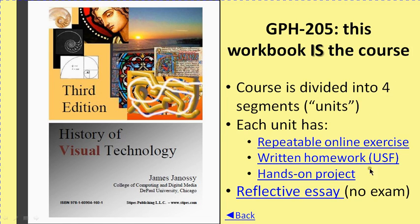Each of these units has three items of work. There's a repeatable online exercise, which is instantly graded homework. It's intended that you do that multiple times, one question at a time, and it helps you review what you don't know — to force you to go back and read, view, and find out where your statements are incorrect. The unit also has a short amount of written homework, which becomes notes for your reflective essay. And each unit contains a hands-on project.